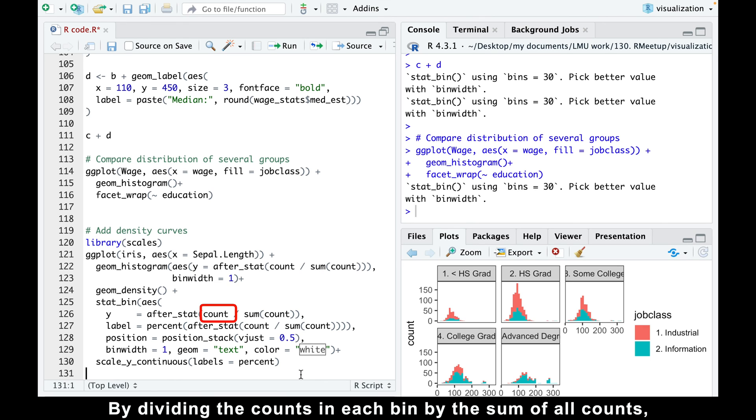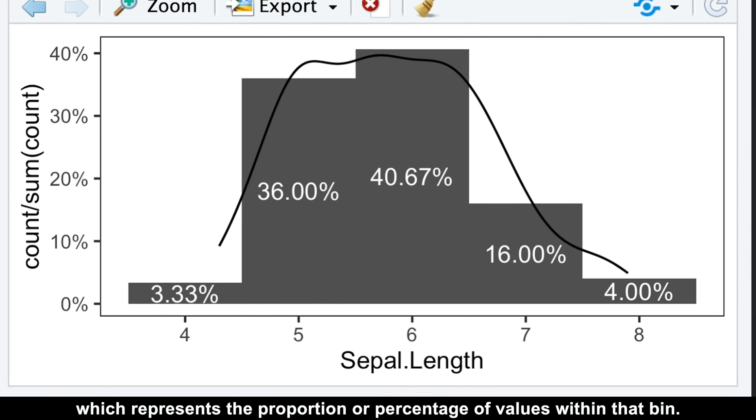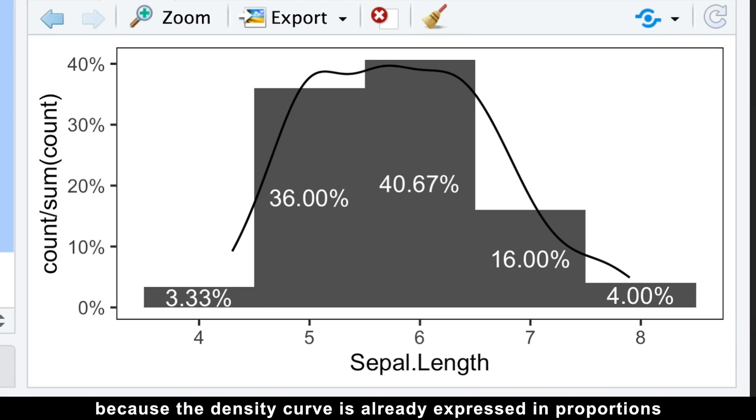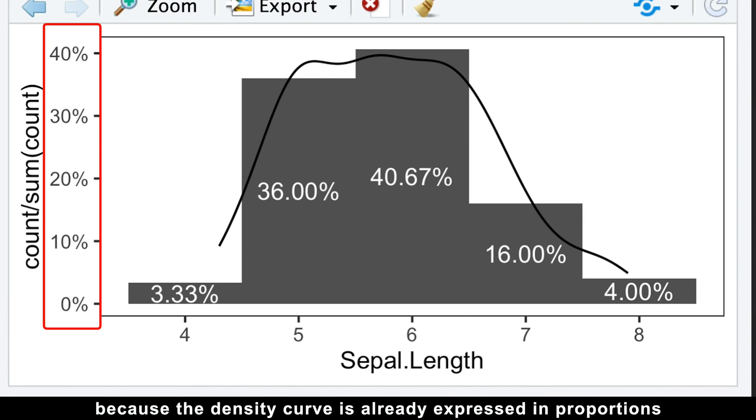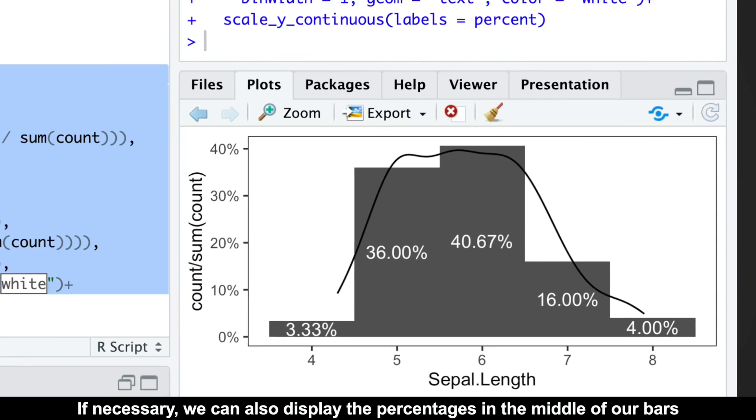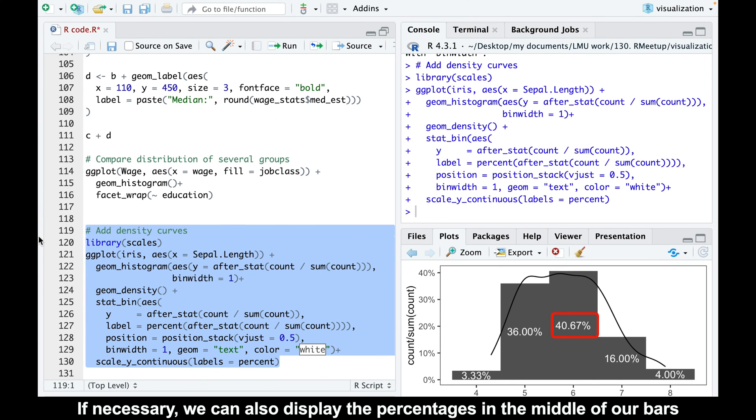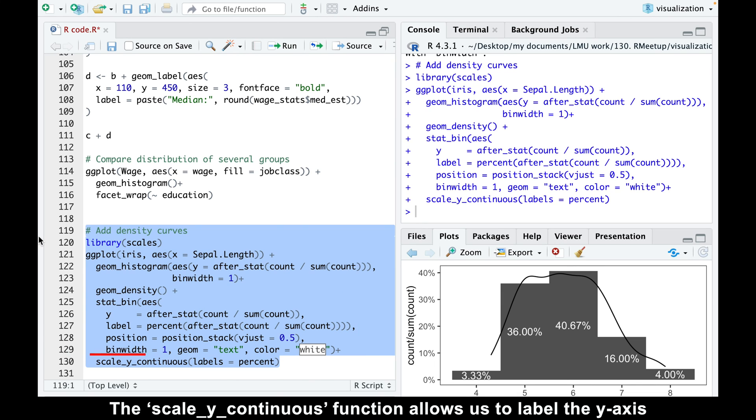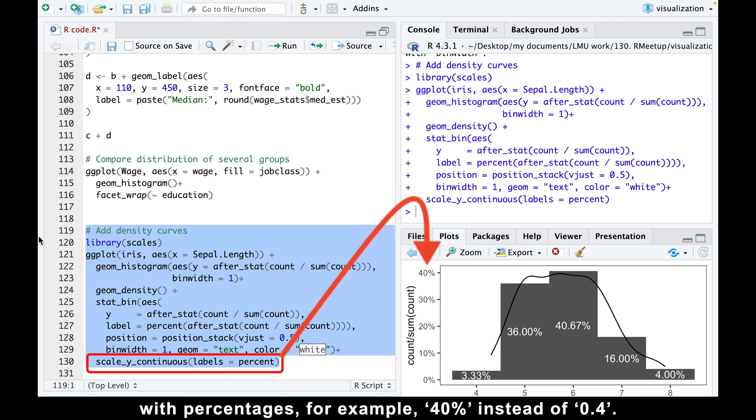We can achieve this by using the after_stat function to calculate proportions. By dividing the counts in each bin by the sum of all counts, we obtain the height of each bar which represents the proportion or percentage of values within that bin. We can use the geom_density function to fit a density curve on top of the histogram, because the density curve is already expressed in proportions or percentages by default. If necessary, we can also display the percentages in the middle of our bars using the stat_bin function and the position argument. The scale_y_continuous function allows us to label the y-axis with percentages, for example, 40% instead of 0.4.